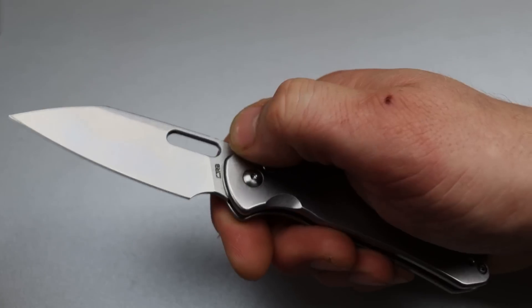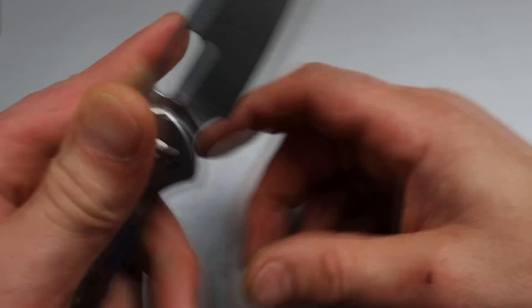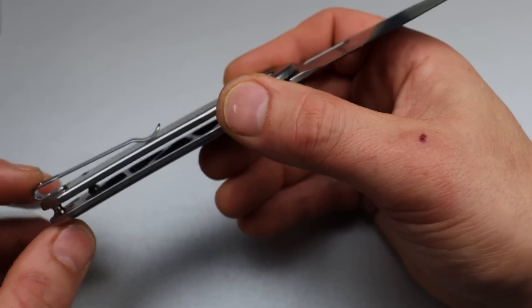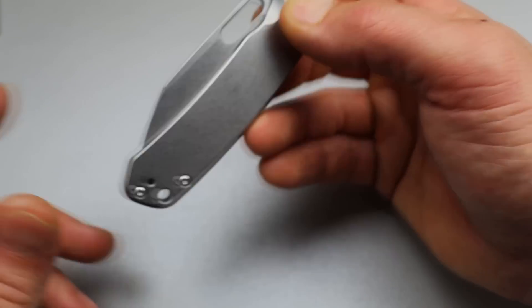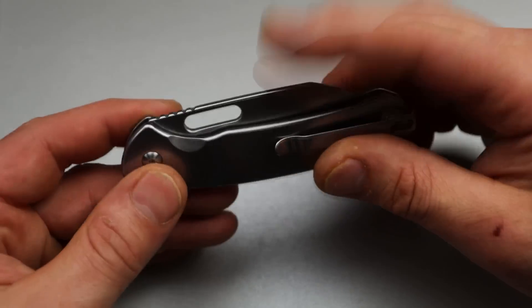So if you want the feeling of titanium without the price tag of it, the CJRB Pyrite is a great option. The deep carry clip is super duper smooth in and out of the pocket. And like I said, it just has a very premium feel to it.